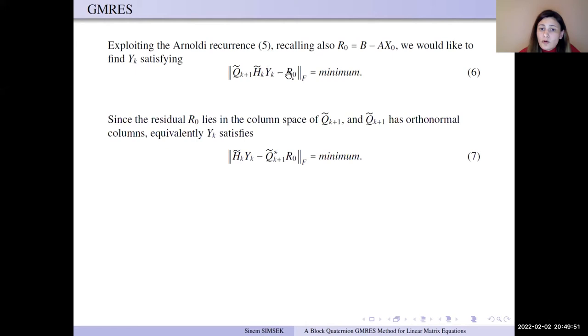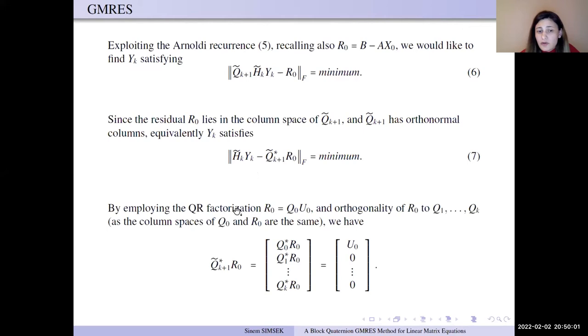We have Arnoldi recurrence equation 5, and r0 equals b minus Ax0. We would like to find a Uk satisfying this equation. r0 lies in column space Qk+1 tilde. So, this norm is equal to this norm.